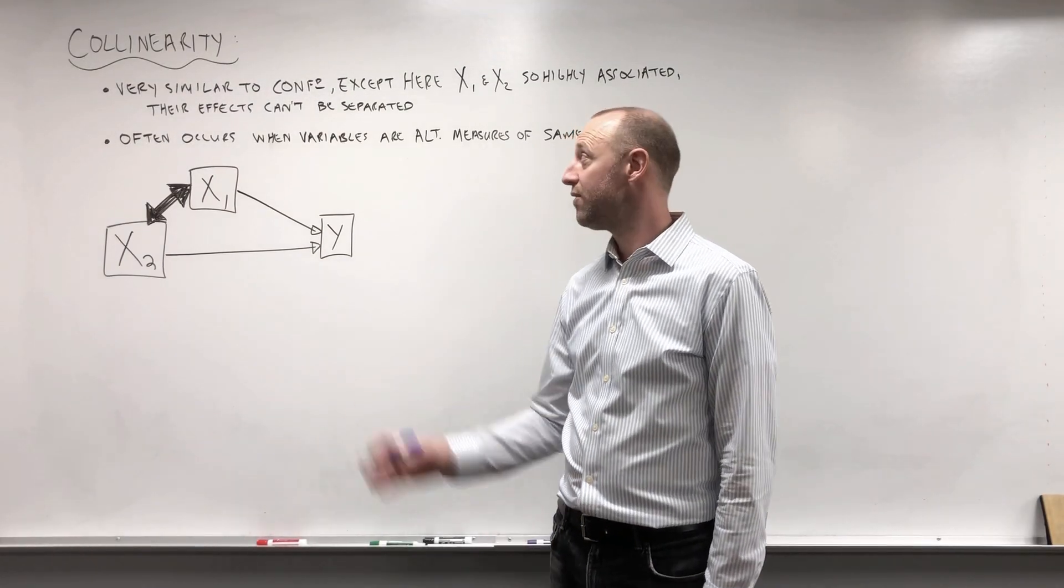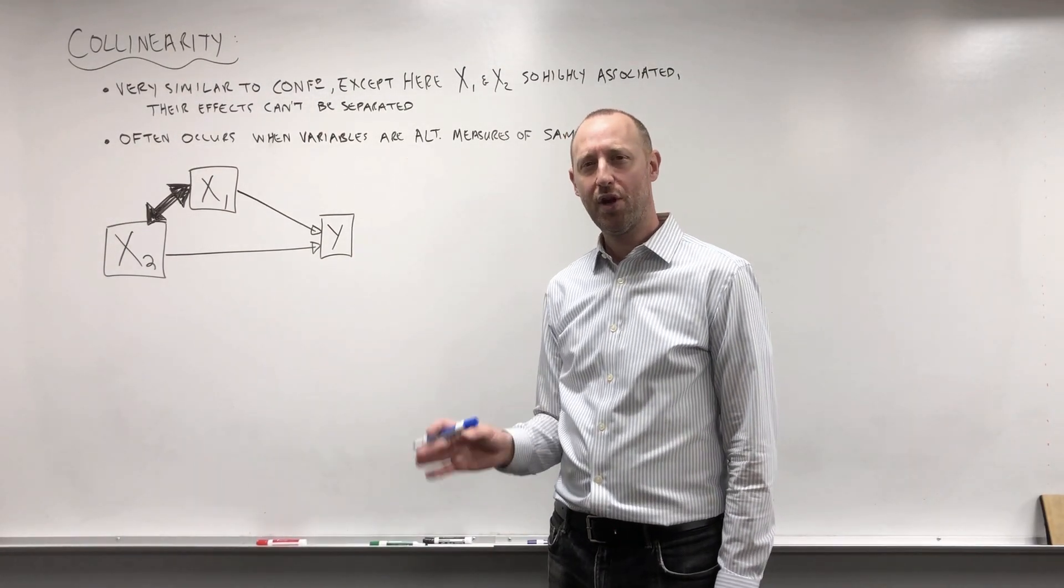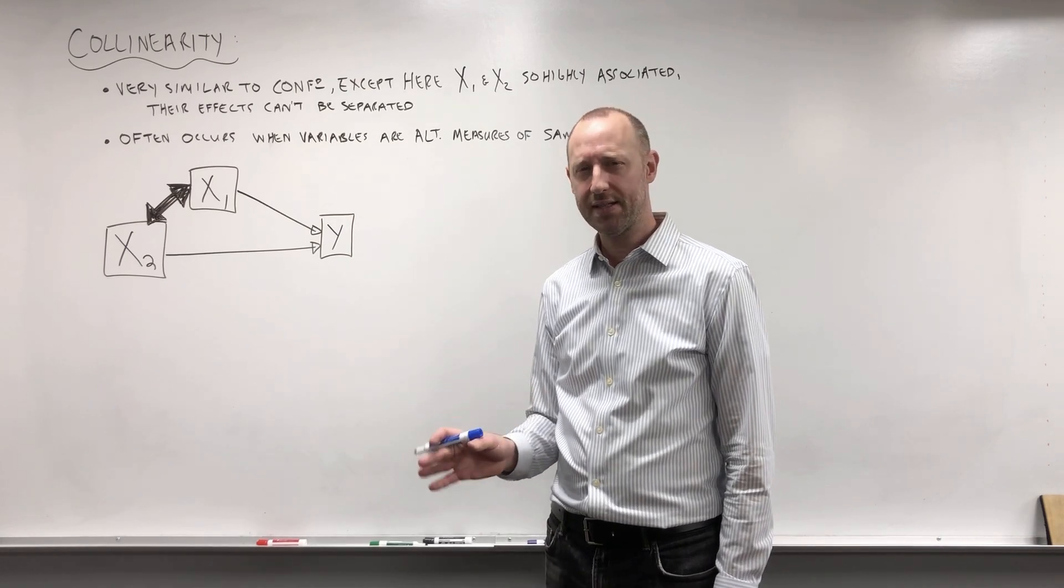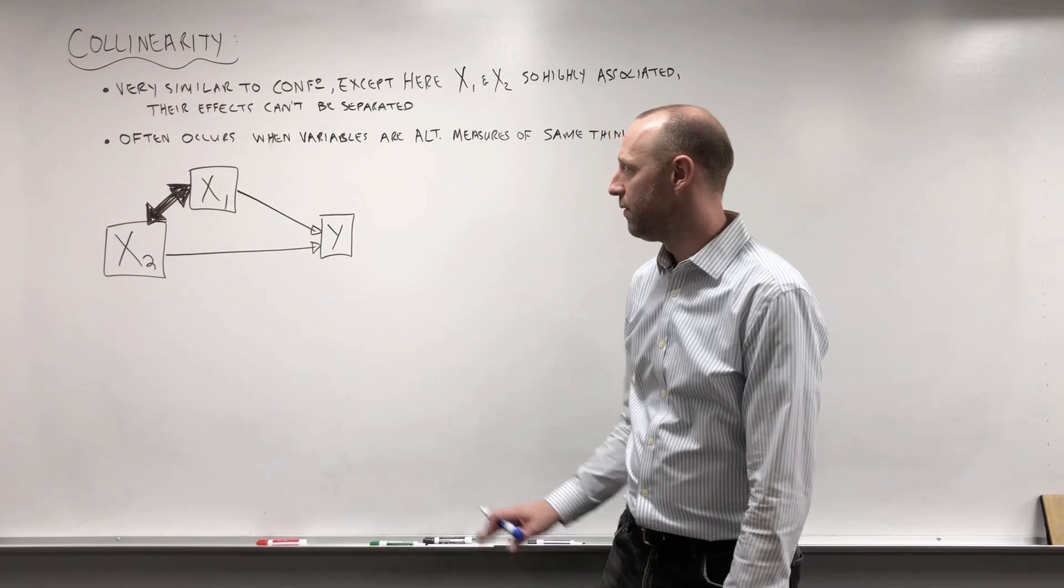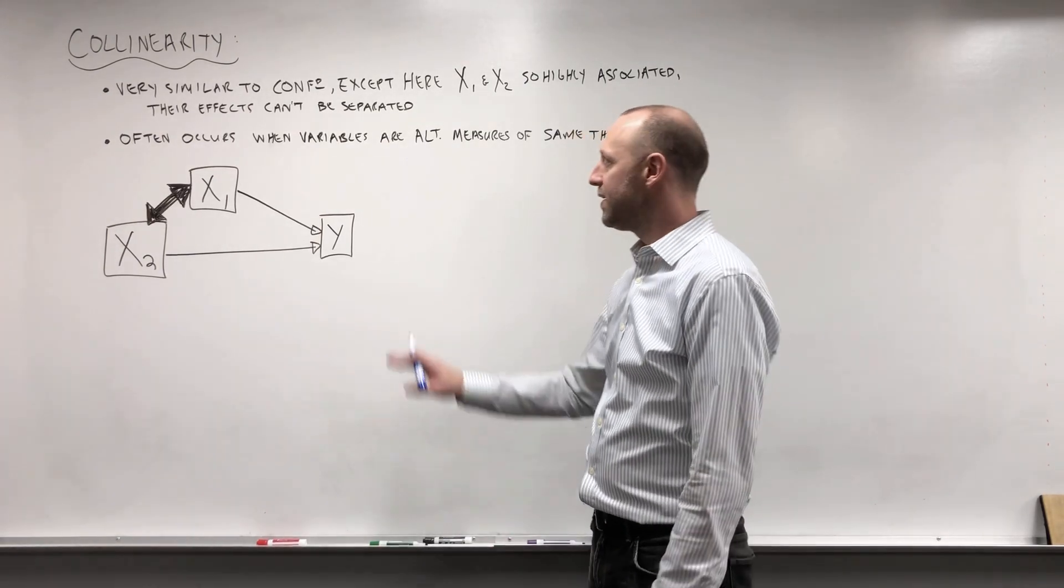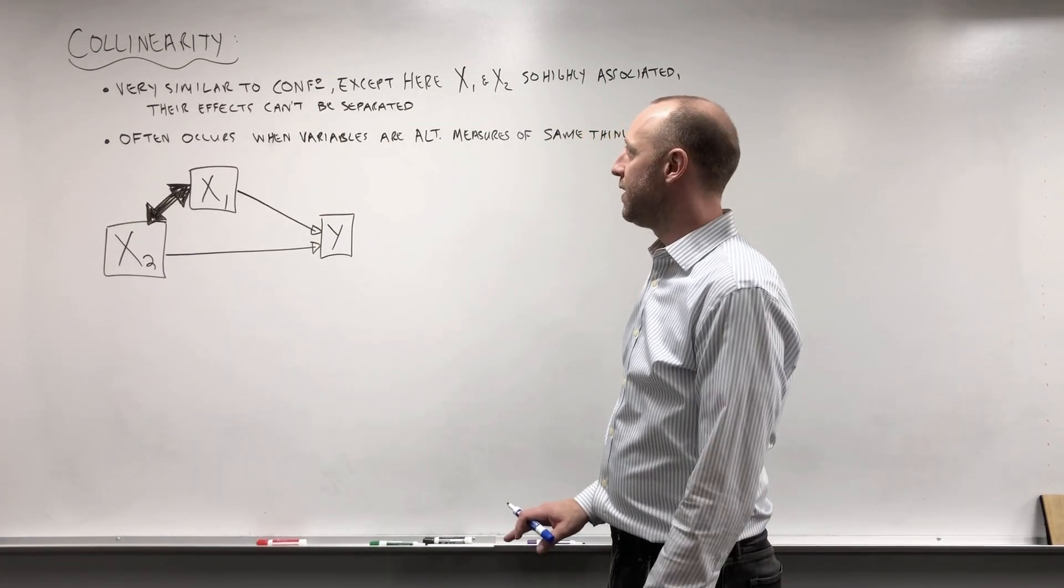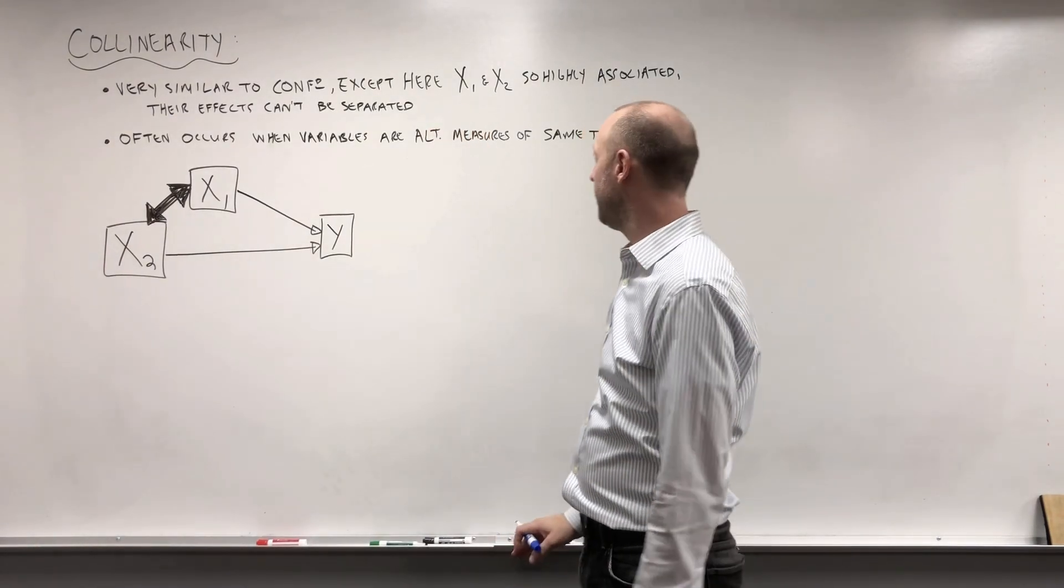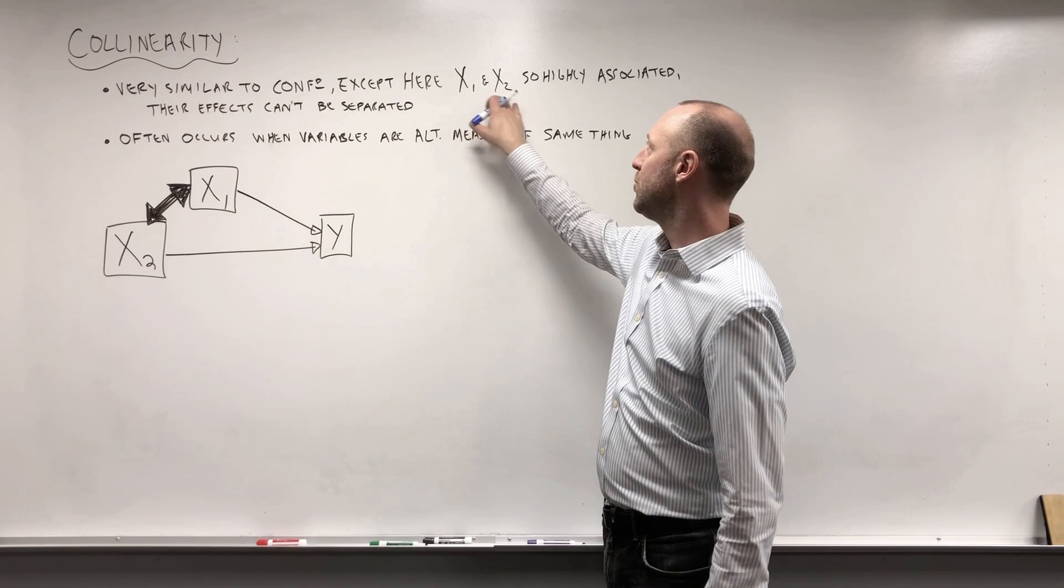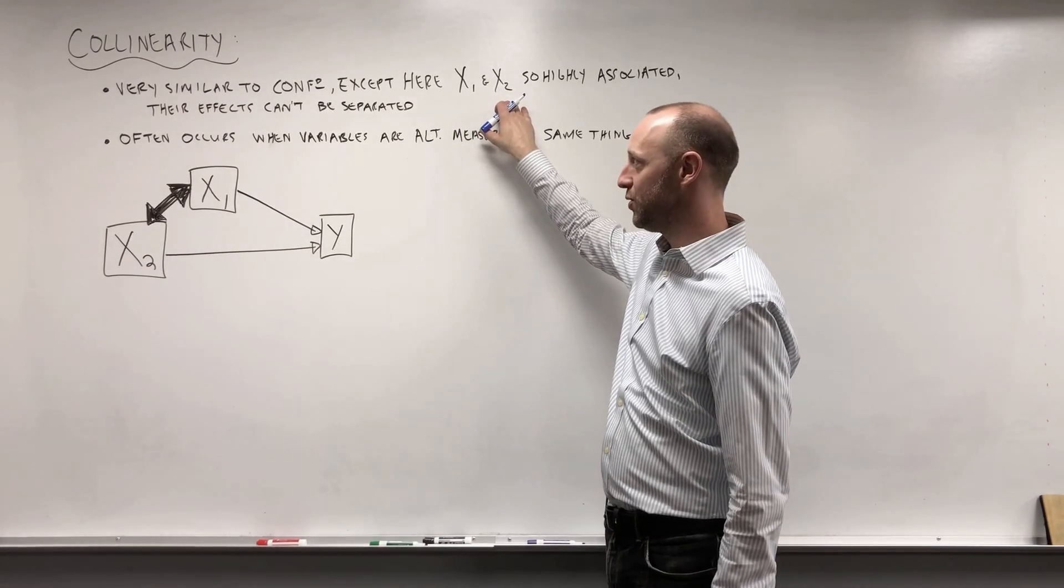We're going to talk about the idea of collinearity and multicollinearity. The concept of collinearity is very similar to confounding, except that here X1 and X2 are so highly associated that their effects cannot really be separated.